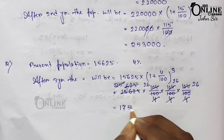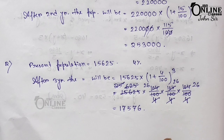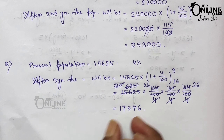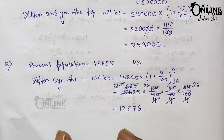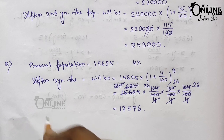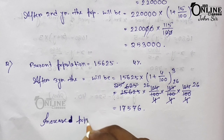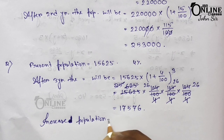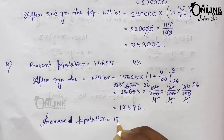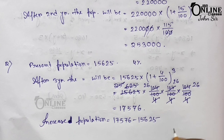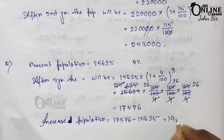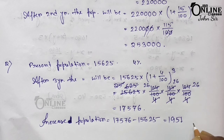So 17,576 is the population after three years. Now, the increase in population equals 17,576 minus 15,625, which equals 1,951 — that is your answer.